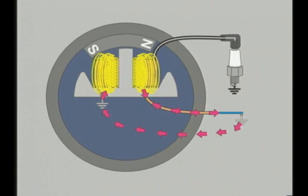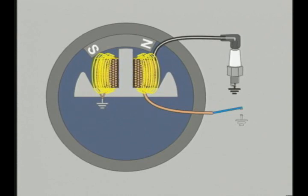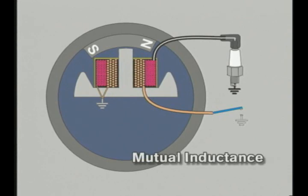Right at that instant, the switch will open the primary circuit, causing the magnetic field around the primary windings to collapse. As it collapses, the flux cuts the secondary windings, inducing a rapid voltage increase. This is known as mutual inductance.